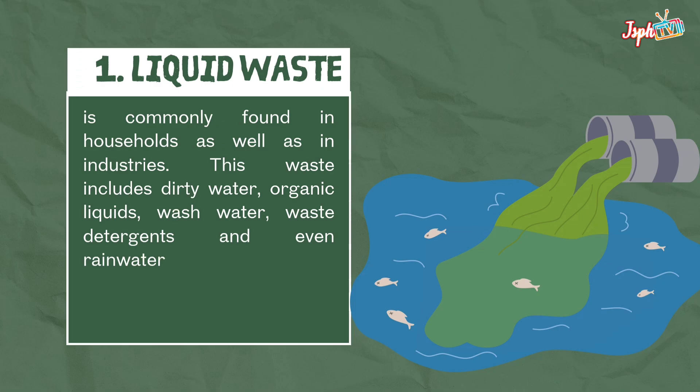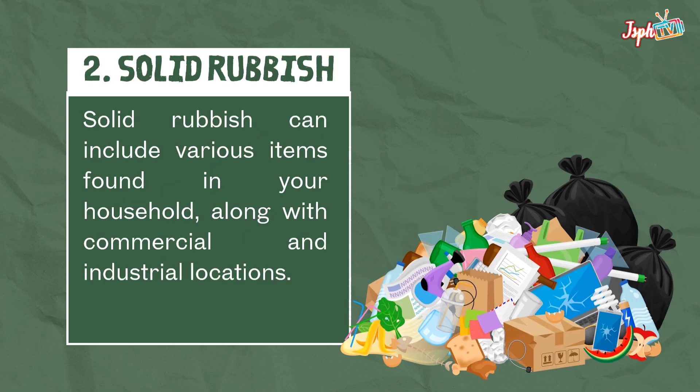For types of waste, first we have liquid waste, commonly found in households as well as in industries. This waste includes dirty water, organic liquids, wash water, waste detergents, and even rainwater. Second, solid rubbish can include various items found in your household, along with commercial and industrial locations.